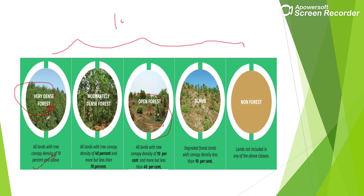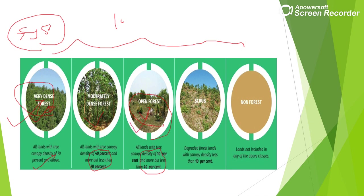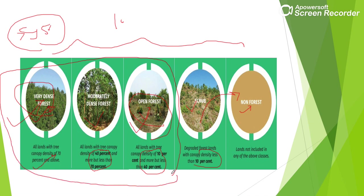It's important to remember that even 10% canopy density areas count as forest. Open Forest, Moderately Dense Forest, and Very Dense Forest — all three are included in forest cover. Areas below 10% canopy density are Scrub, and anything below that is Non-Forest Area.